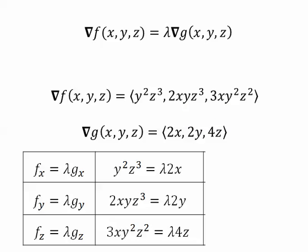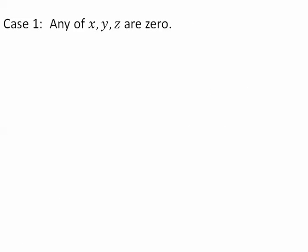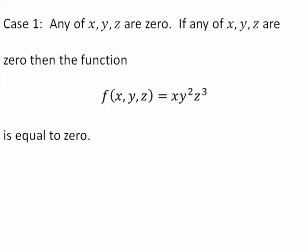I'd like to break this up into two cases. Case 1: Suppose either x or y or z are 0. In that case, for our particular function, the way that our function is written, we can see that our function will equal 0. Case 2: X is not 0, Y is not 0, Z is not 0.